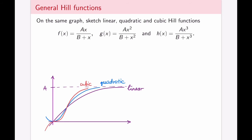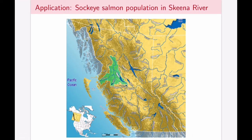These are continuous functions where every single point corresponds to a point on the graph. On the flip side, we might have something given by discrete data points. Let's take a look at the application of the sockeye salmon population in Skeena River. Skeena River is the river in the north of BC, and the salmon population there has been tracked carefully from the early 1900s.